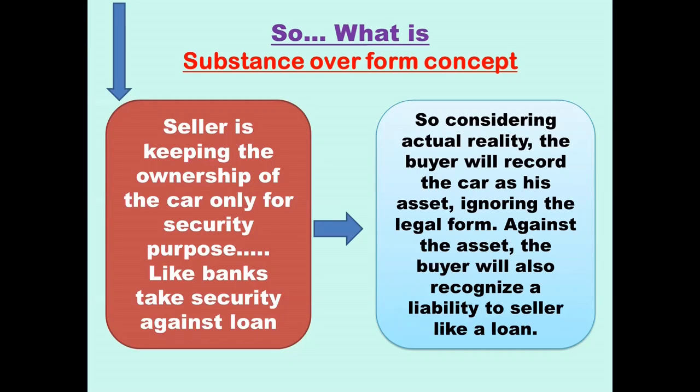Therefore, if we consider the entire transaction, the reality to consider, then we will see that the actual buyer can use the actual asset. Then, the asset is given as a liability. Then, the liability is given as an instrument payment. Then, the liability is given as a liability.